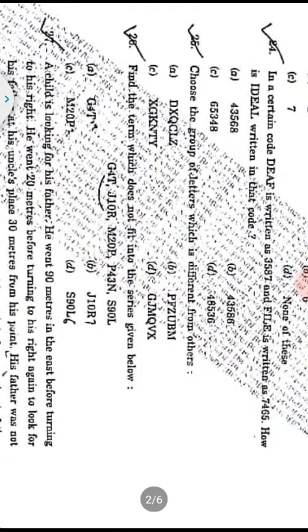Question twenty-four: In a certain code language, DEAF is written as 3587 and FILE is written as 7465. How is IDEAL written? This is direct coding: I is in FILE at position 2, so I = 4; D = 3; E = 5; A = 8; L = 6. So IDEAL is written as 43586. The answer is option B: 43586.